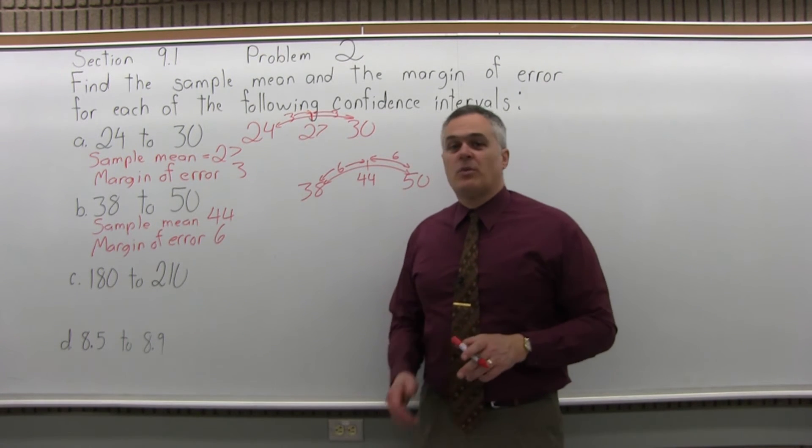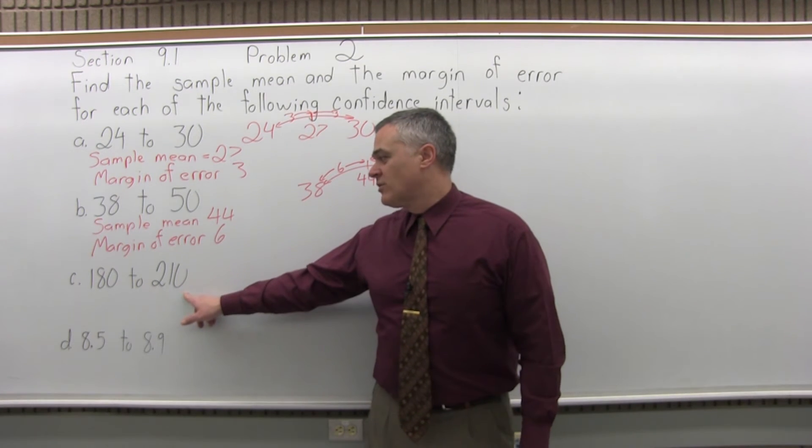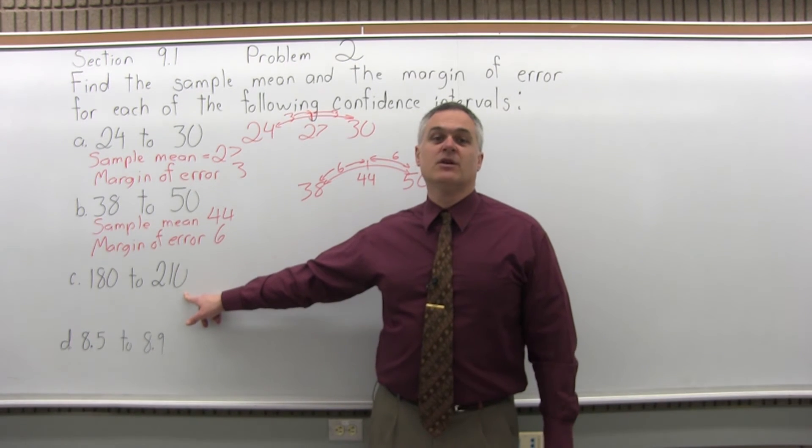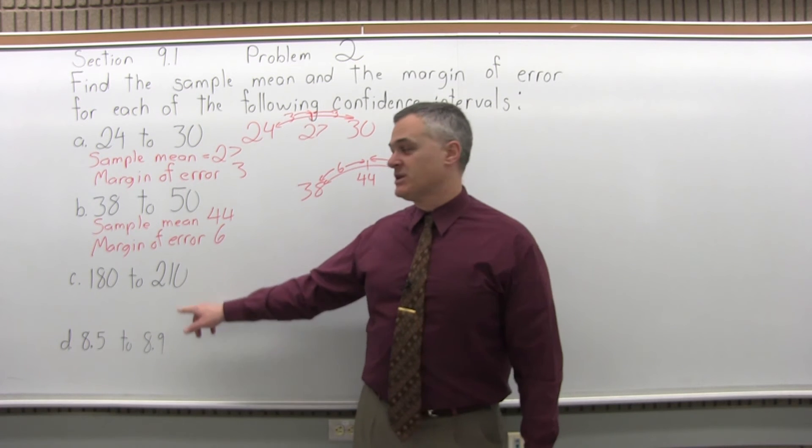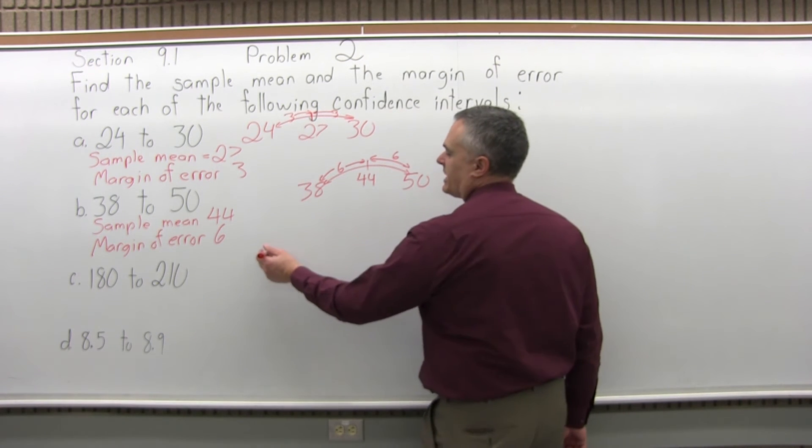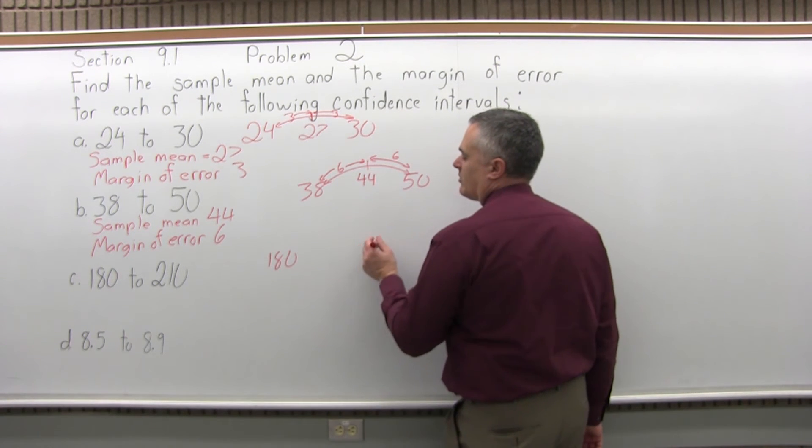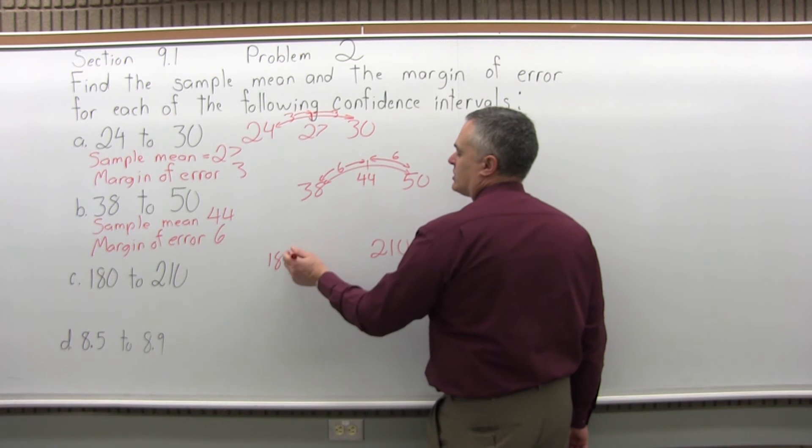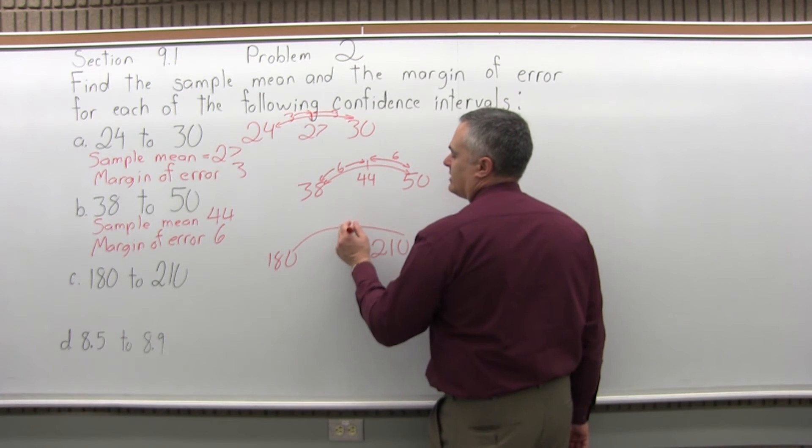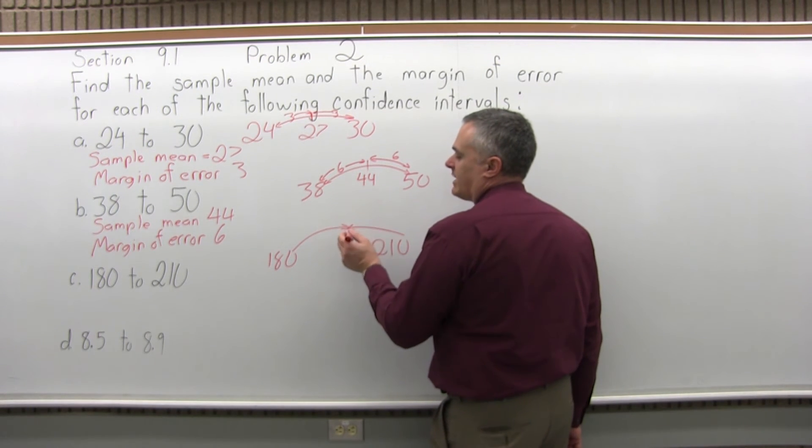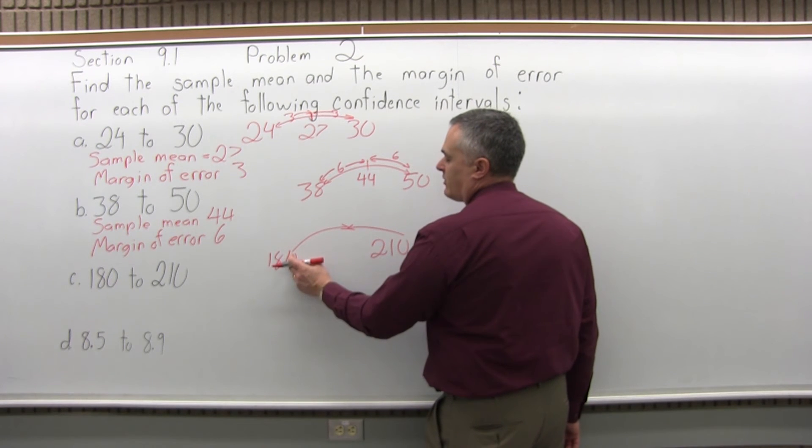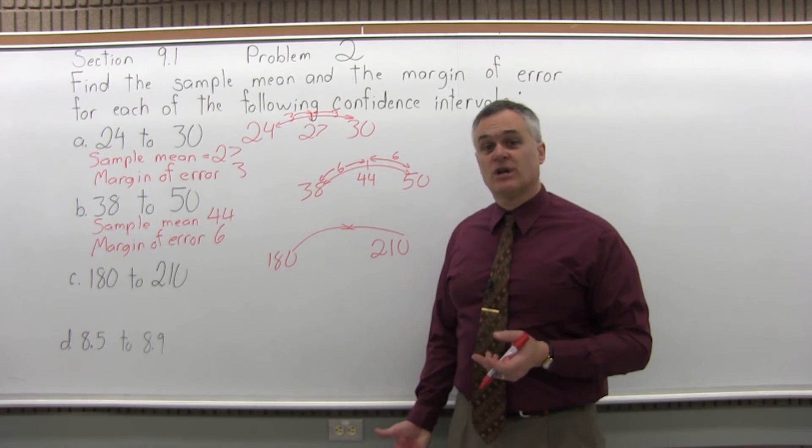So part C, the confidence interval goes from 180 to 210, what's the sample mean and what's the margin of error. So same process, imagine 180 and 210 on a number line. So to go from 180 to 210, the midpoint where they meet, that would be your margin of error. So to go from 180 to 210 is a distance of 30.